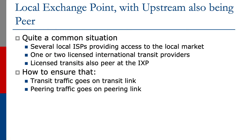We're now going to look at the case of the local exchange point where the upstream provider is also peering at the IX. This is a relatively common example where all the operators wish to participate in the local exchange point, but perhaps two or three operators serving the economy where the IX is located are also the transit providers for everybody else.